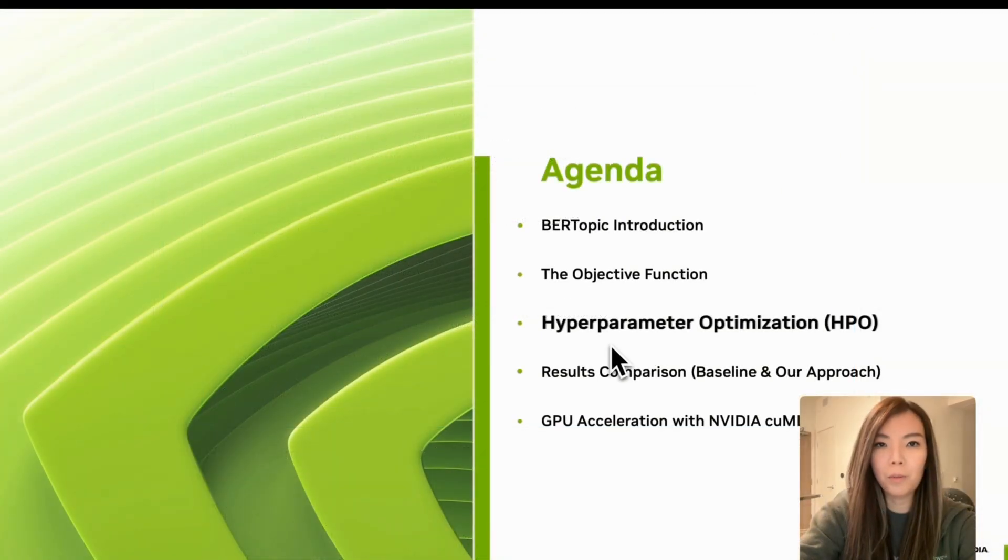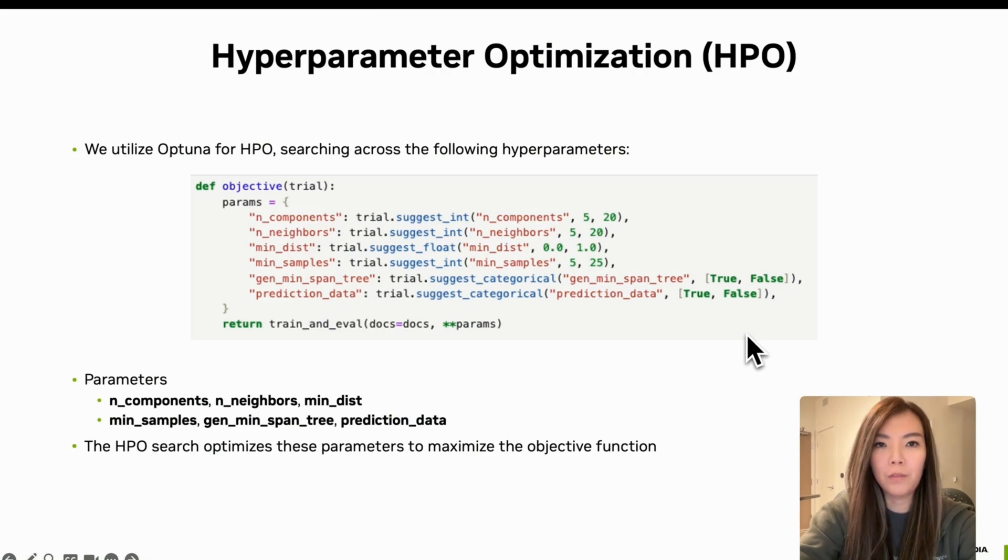Next up is hyperparameter optimization, or HPO. We utilize Optuna for HPO, searching across the following hyperparameters. N_components is the number of UMAP components for dimensionality reduction. N_neighbors is the number of neighbors considered for clustering. Min_dist is the minimum distance between points in UMAP.